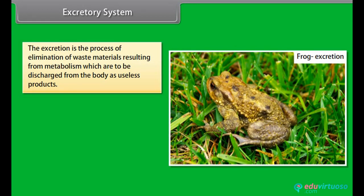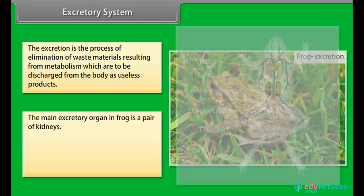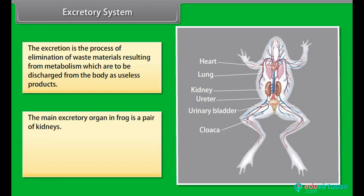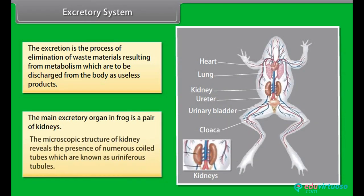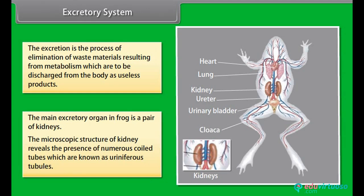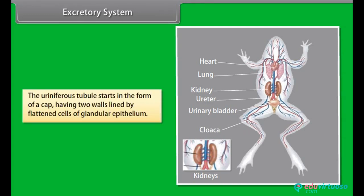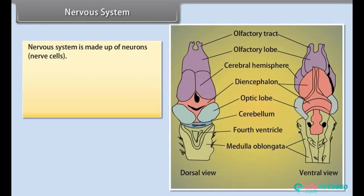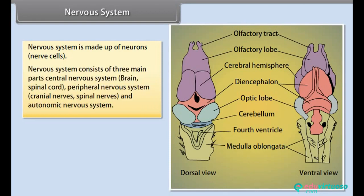Excretion is the process of elimination of waste materials resulting from metabolism, which are discharged from the body as useless products. The main excretory organ in frog is a pair of kidneys. The microscopic structure of kidney reveals the presence of numerous coiled tubes known as uriniferous tubules. The uriniferous tubules start in the form of a cap having two walls lined by flattened cells of glandular epithelium.